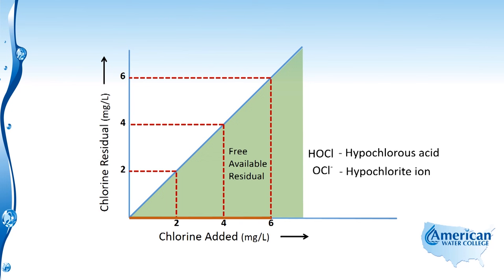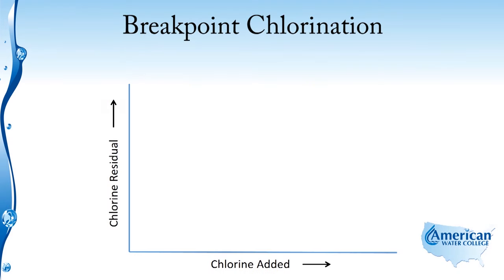But what happens when we add this same chlorine to groundwater or surface water that has impurities in it, such as iron, manganese, nitrite, or even ammonia that's the result of decaying natural organic matter in the surface water source? Let's take a look and see.